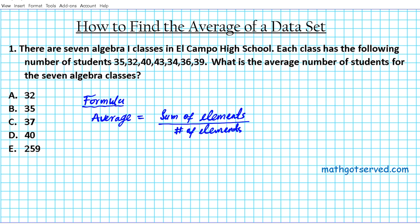All right, so in this problem that we're dealing with right now, what are the elements that we're looking at? The elements are the number of students in the algebra one class, so we have 35, 32, 40, 43, 34, 36, and 39. All right, so one, two, three, four, five, six, seven.